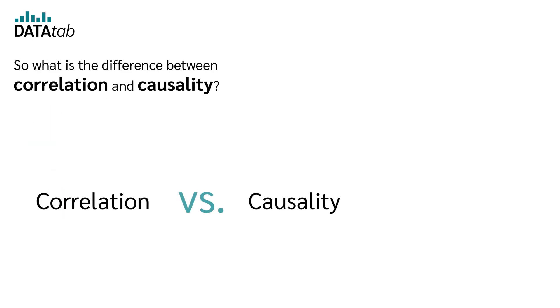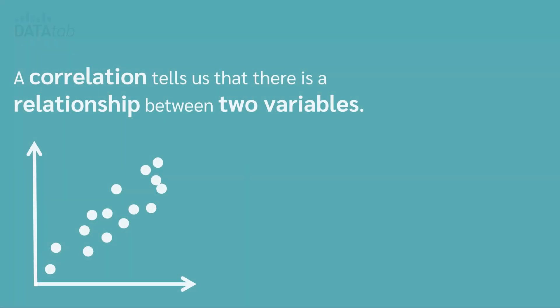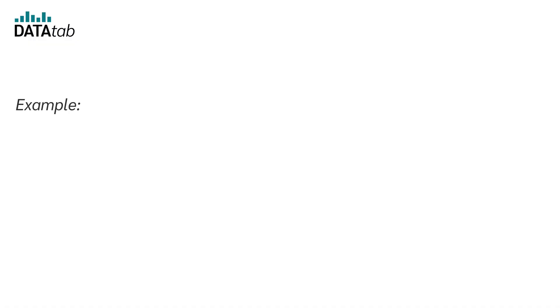So, what is the difference between correlation and causality? A correlation tells us that there is a relationship between two variables.